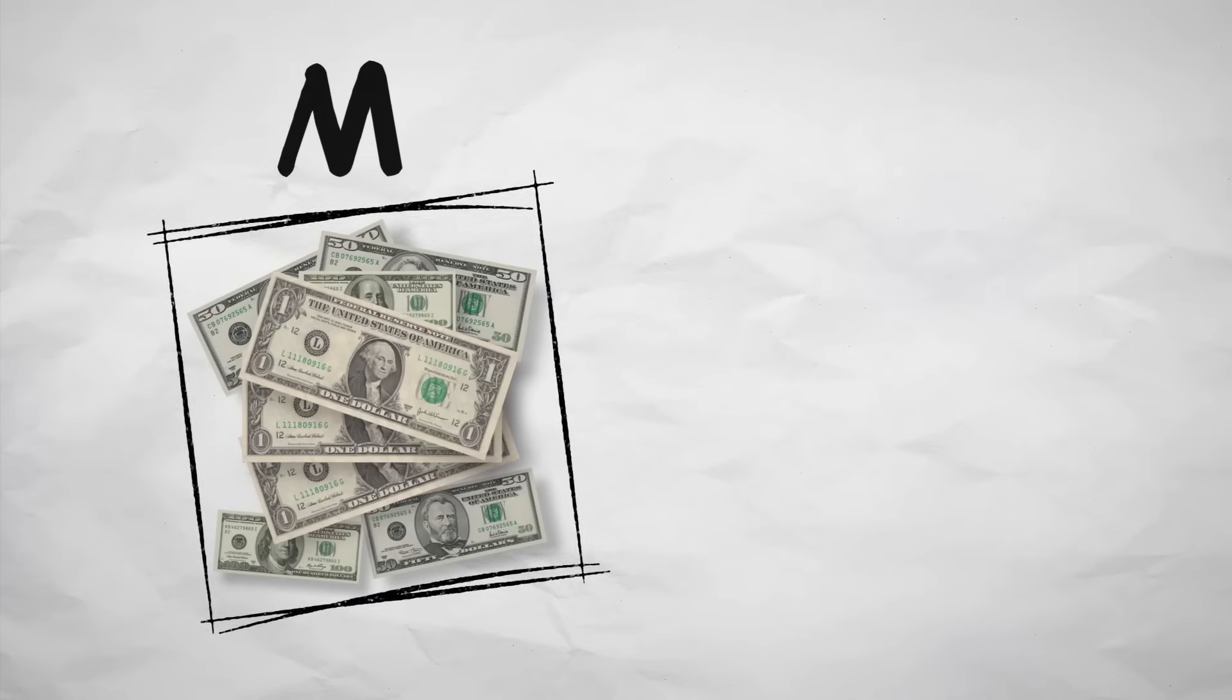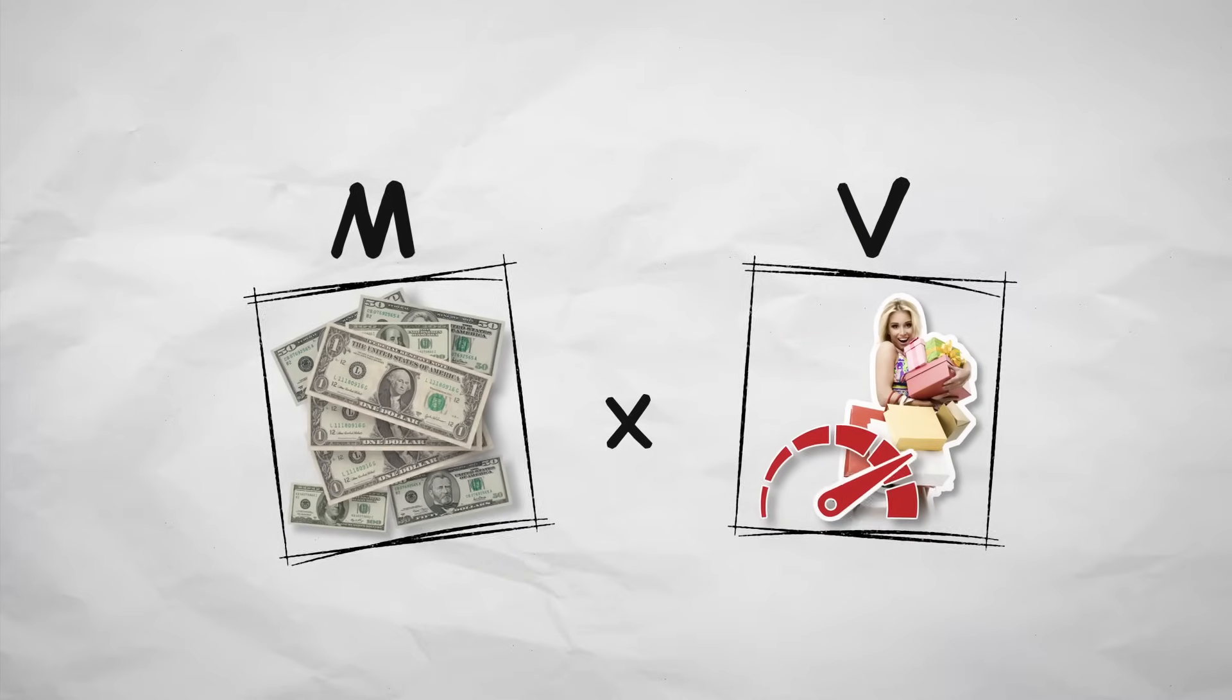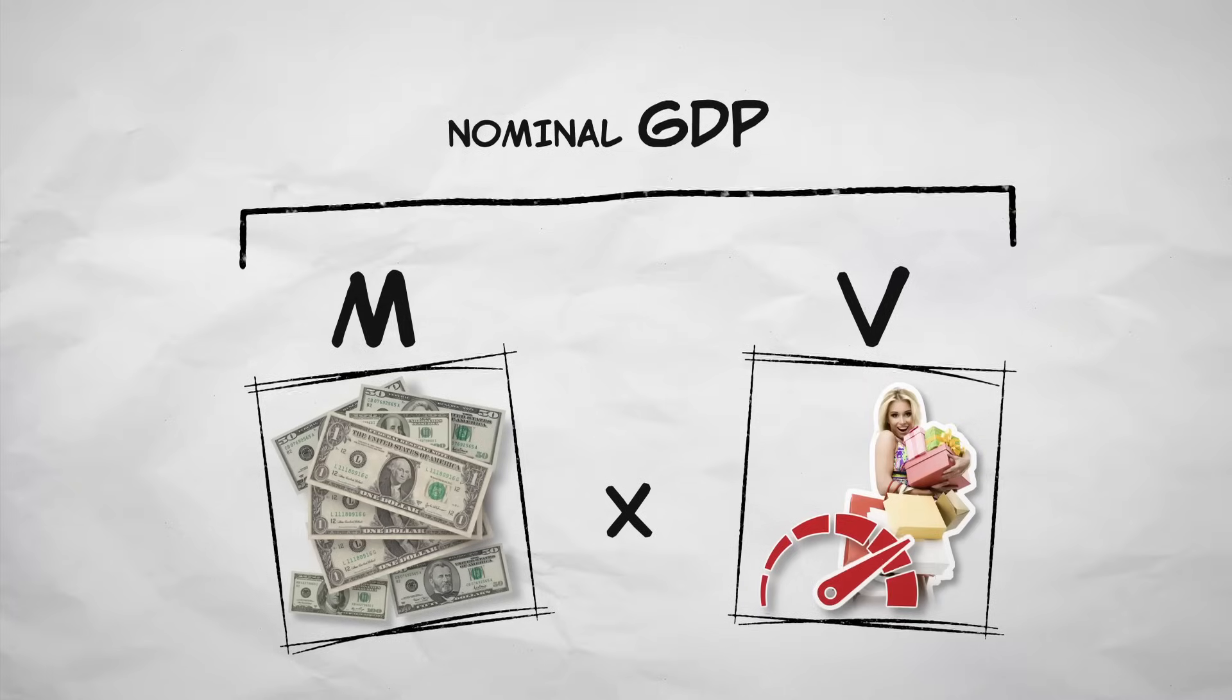Same thing over here. You take all our money, M, and multiply it by how many times the average dollar was spent, or V, and you get nominal GDP as well.